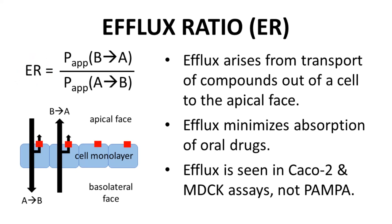If a compound has an undesirably high efflux ratio, structural changes may be required so that the molecule is a less favorable substrate for the transporter, thereby reducing the efflux ratio closer to 1. Not all permeability assays detect efflux: PAMPA membranes do not contain transporter proteins, MDCK has some transporters, and CACO-2-based assays have the highest presence of transporters.